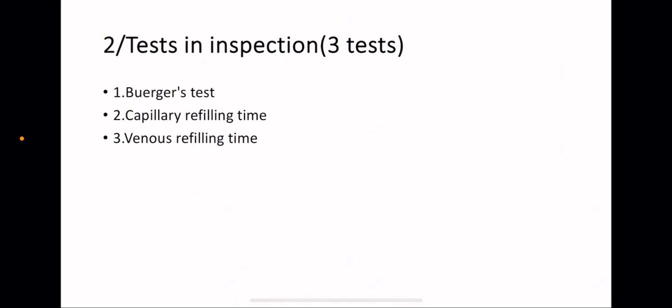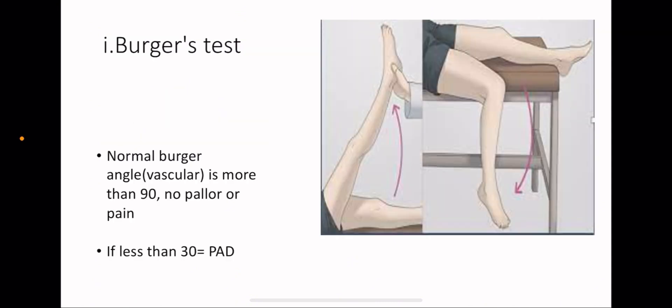Part B of inspection, we have tests that we do in inspection, and these are three tests including Buerger test number one, number two capillary refilling time, and number three venous refilling time.